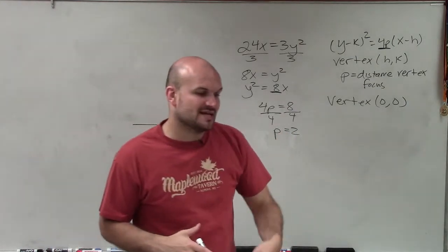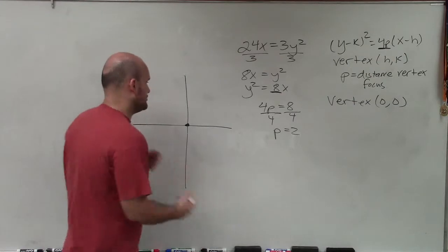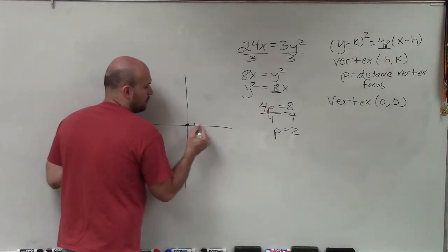Therefore, the distance from my vertex to my focus is positive 2. That means I'm going to go to the right 2 units.